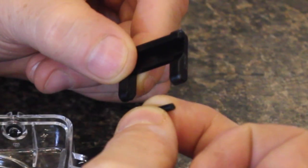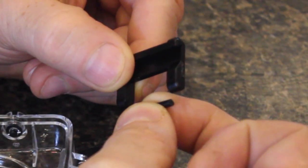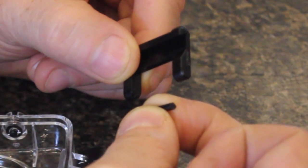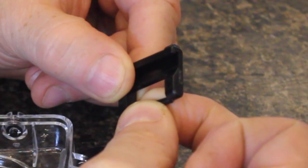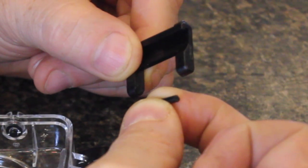So I broke the hinge on my waterproof camera case. And let me tell you, this type of plastic, polyethylene, this is a very tough repair for any type of product. But I'm going to show you how to repair this better than it was new.